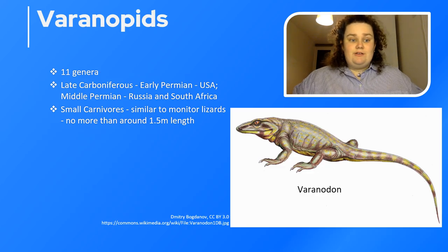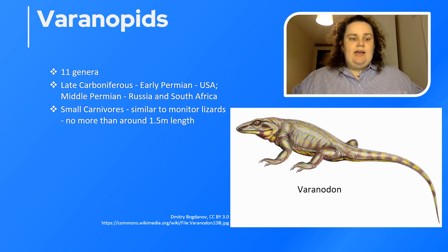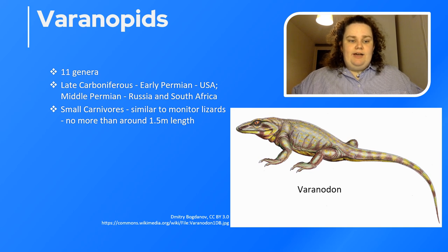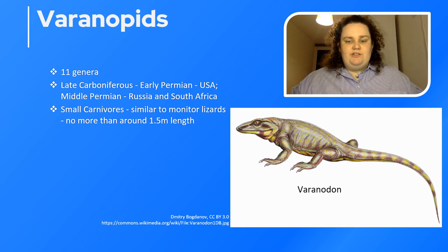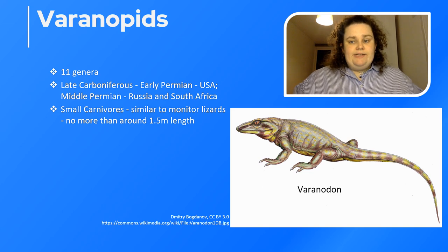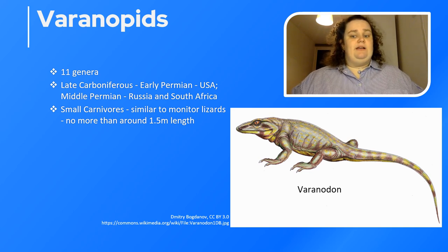Moving on to the varanopids: there are 11 genera ranging from the late Carboniferous to the early Permian, found in the USA and also in Russia and South Africa in middle Permian deposits. They were likely carnivores, similar in size and feeding style to monitor lizards. Recent studies have found support for the varanopids being reptiles rather than synapsids, but this is contradicted by morphological evidence showing features of true pelycosaurs — deep narrow elongated skulls, long jaws and sharp teeth — alongside lizard-like features such as long tails, lizard-like bodies and thin legs. Their placement on the family tree is uncertain.